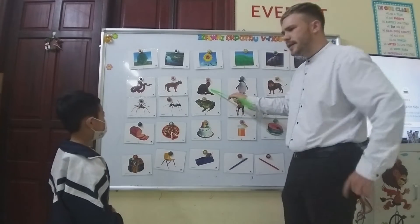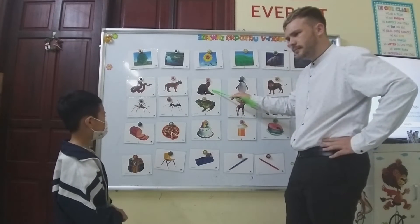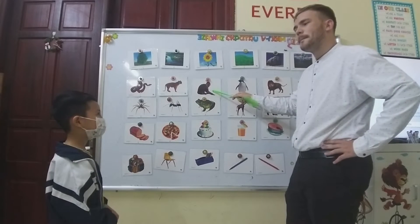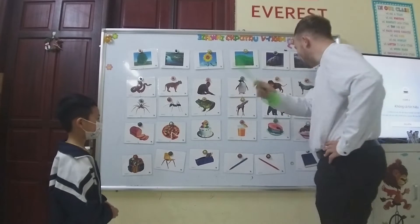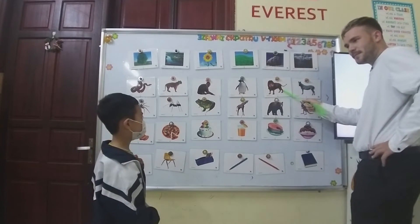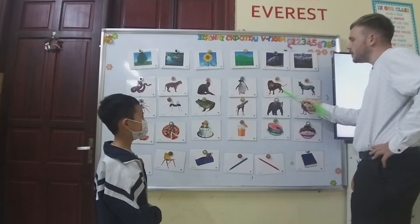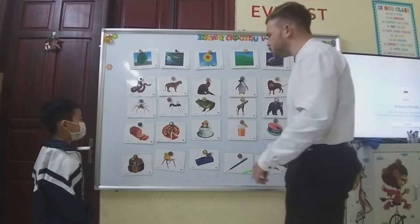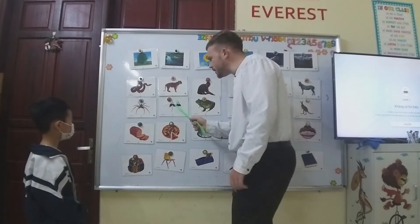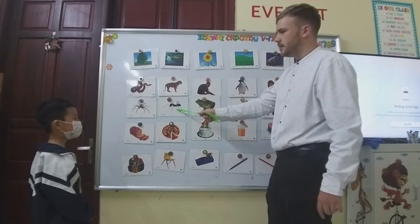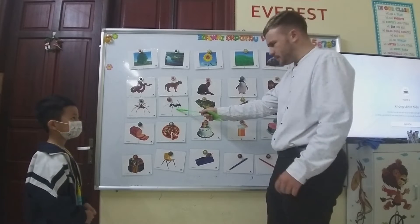What animal is this? It's a monkey. What animal is this? One more animal. What animal is this? Ant. Well done.